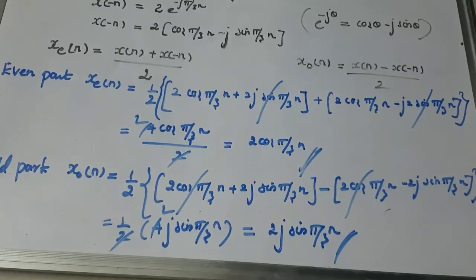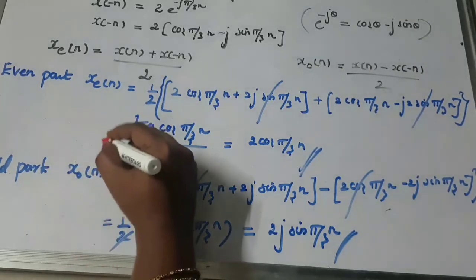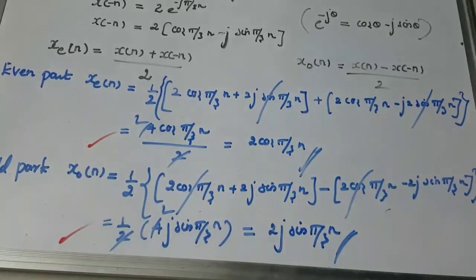So the even part of the signal is x_e(n) = 2·cos(πn/3), and the odd part of the signal is x_o(n) = 2j·sin(πn/3). These are the final answers. Thank you.